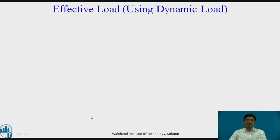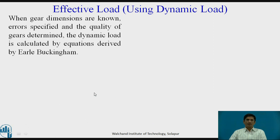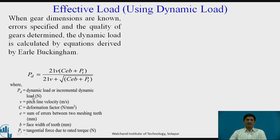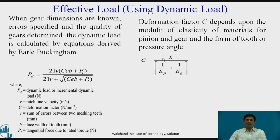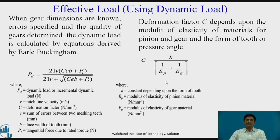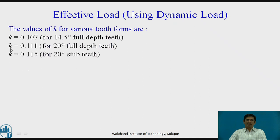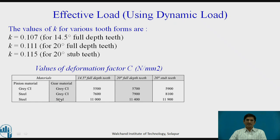Hence, effective load can be obtained using dynamic load PD via Buckingham's formula. C is the deformation factor and E is the sum of errors between two meshing teeth. The deformation factor C is calculated by a formula where EP and EG are the moduli of elasticity of pinion and gear respectively, and K is a constant depending on the form of tooth. Generally, K equals 0.111 for 20-degree full depth involute tooth profile. For a steel combination, C is commonly 11400.